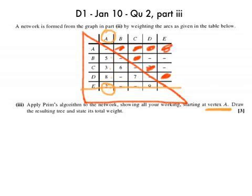And then I cross that row out and I circle there. So at this stage I know that A to E has a weight of 2.